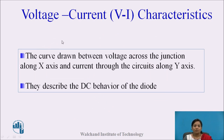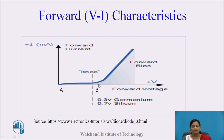The VI characteristic is the curve between the voltage across the junction on the X-axis and the current through the circuit on the Y-axis. It describes the DC behavior of the diode. In the forward VI characteristic, the X-axis shows forward voltage and the Y-axis shows forward current. In the initial region from A to B, when the forward voltage is very small, the current flowing is also very small. After point B, the current increases exponentially — at point B the depletion region completely collapses and current increases rapidly. This point is called the knee voltage or cut-in voltage.